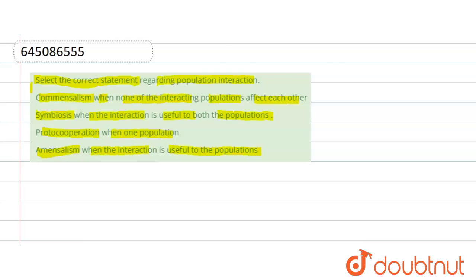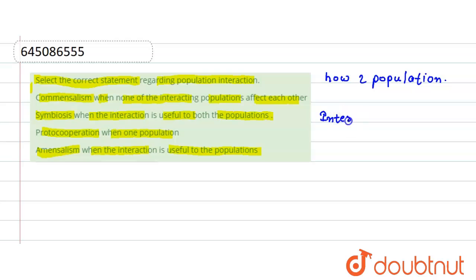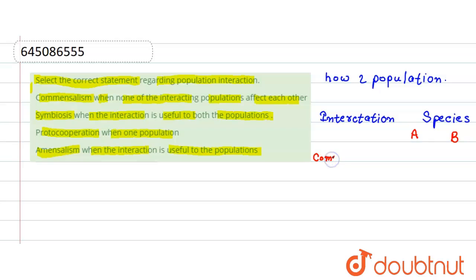We have to identify the correct statement here. Population interaction means how two populations are interacting. We will consider two species, species A and species B, and write out the interaction for each case.